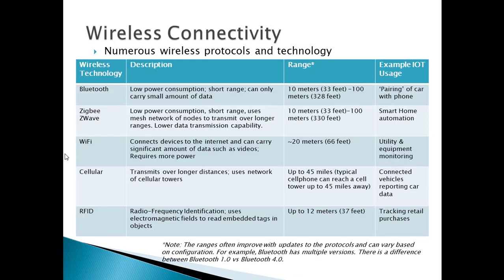This table highlights some of the many wireless connectivity technologies. Depending on the use case, the wireless technology to use will vary. Each technology has different capabilities. Bluetooth is used for devices a short distance from one another. Bluetooth is commonly used to connect your phone to your car, where the distance from the phone to car is short.